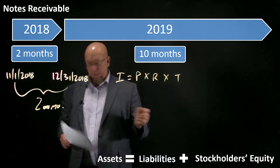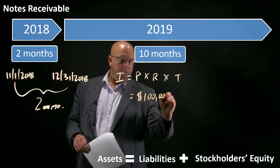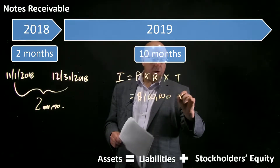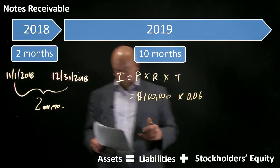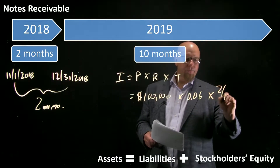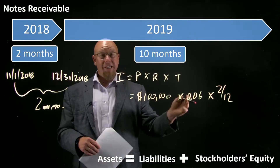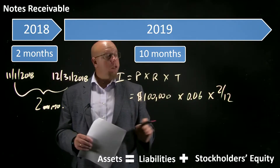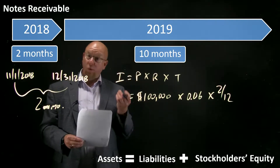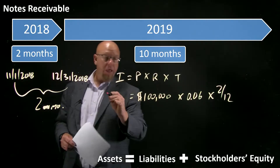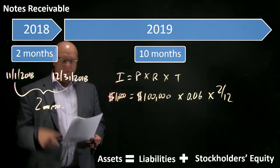We use the fundamental formula: Interest = Principal × Rate × Time. In this case, principal is $100,000, rate is 6%, and time is 2/12 — because this interest rate is 6% per year, meaning 6% for twelve months, and two months have elapsed. That gives us $1,000 of interest earned through December 31.